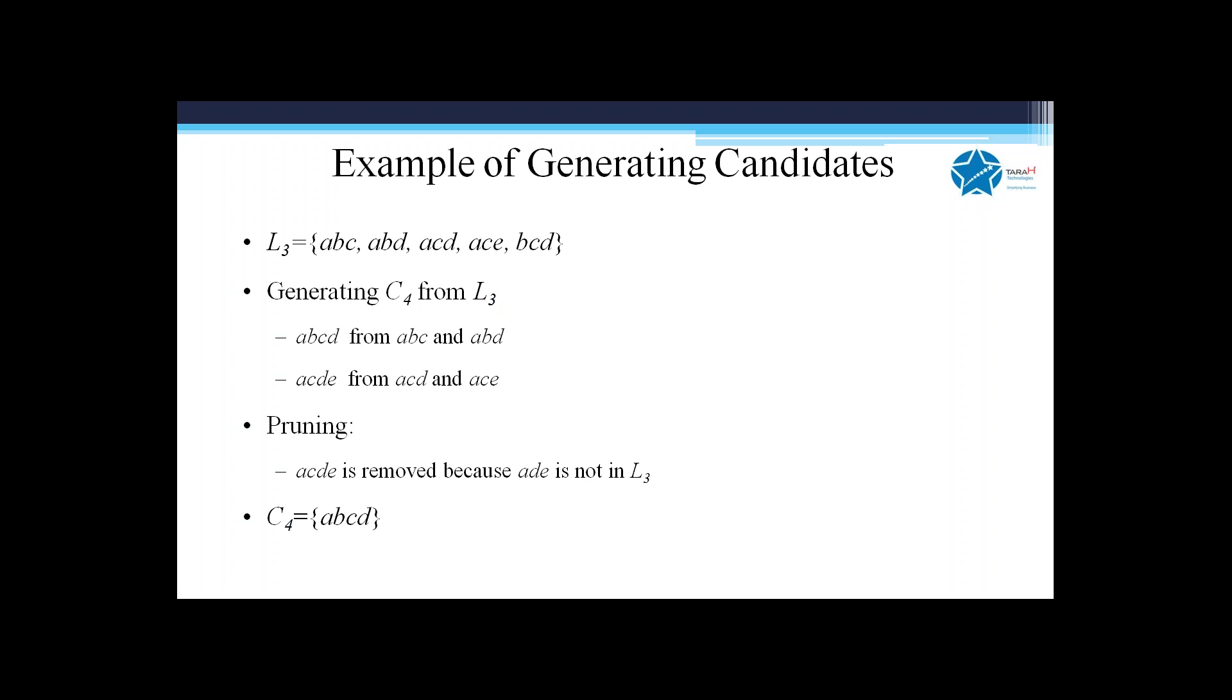So you cannot have a frequent itemset of size four called acde. You have to restrict it to abcd - that's the only one which satisfies. This pruning is about removing those K-level itemsets where something at K minus one or K minus two is not satisfying the minimum support condition.